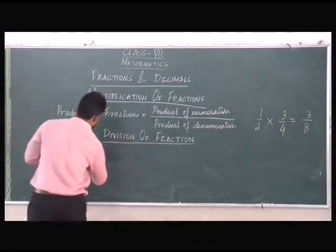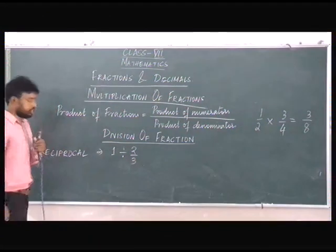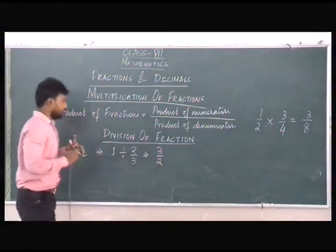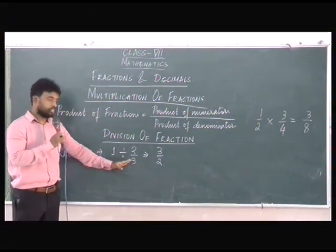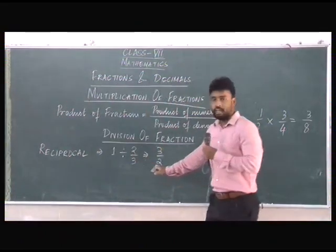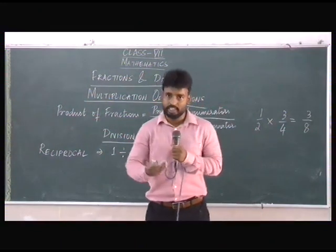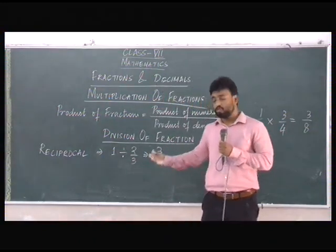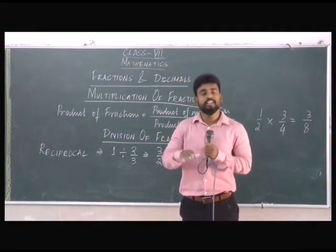For example, if we divide one with any fraction, we get the reciprocal of that fraction. So the reciprocal of 2 by 3 is 3 by 2. Similarly, the reciprocal of 7 by 2 is 2 by 7. The reciprocal of 5 by 9 is 9 by 5. So simply, we get the reciprocal by dividing one with that fraction.